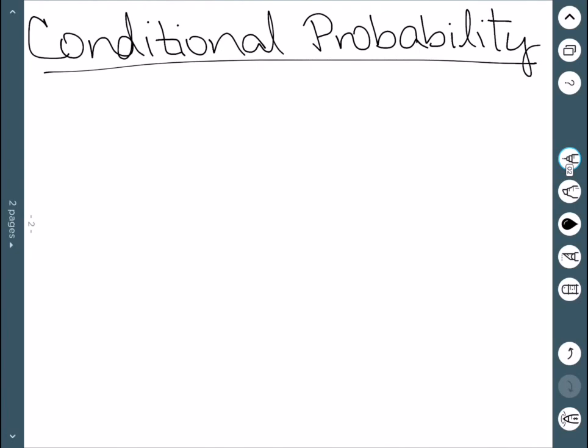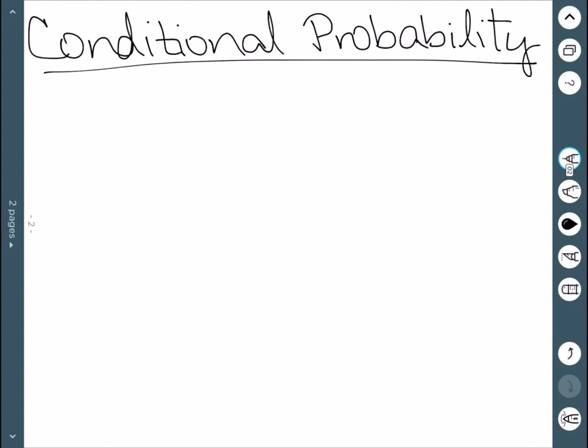Before we can define the probability of dependent events, we need to discuss conditional probability. The conditional probability is the probability that event B occurs after event A has already occurred.